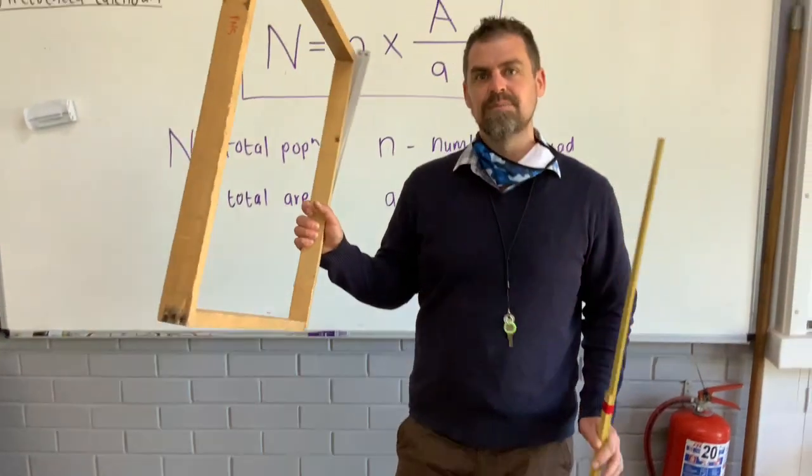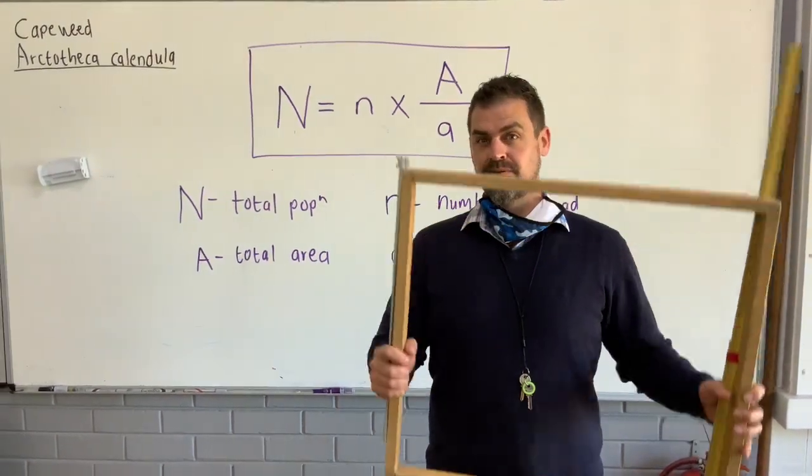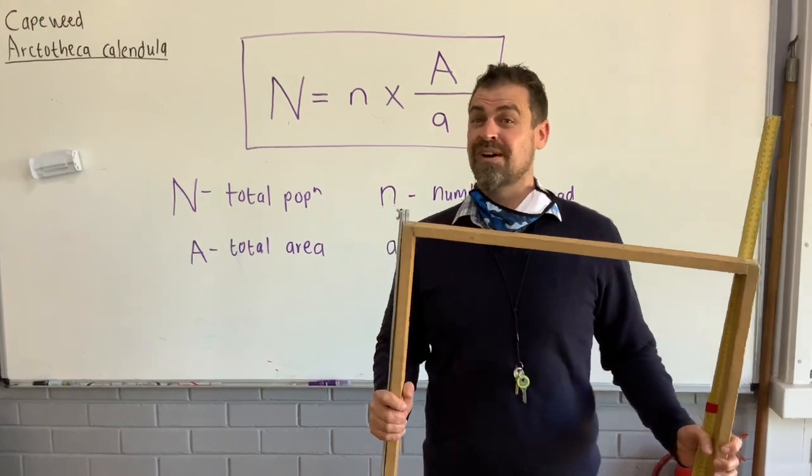So in this case the quad is 50 centimeters by 50 centimeters and that's 0.5 times 0.5 and that's 0.25 meters squared.